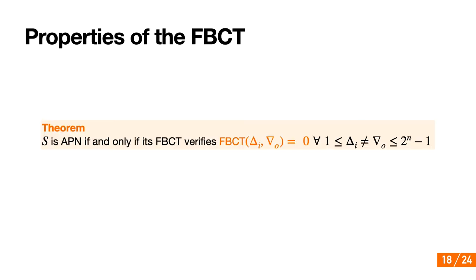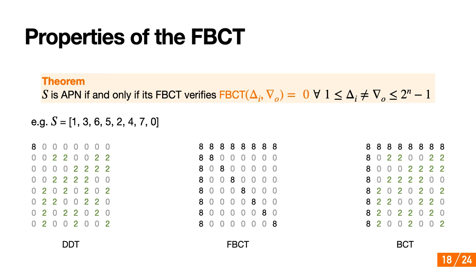We also have properties regarding APN functions. A function S is called almost perfect nonlinear (APN) if the derivative of S at delta_i has either zero or two solutions for any nonzero delta_i. When looking at the FBCT of such functions, S is APN if and only if the coefficient of its FBCT equals zero, except in the first row, first column, or first diagonal. Here's an example of a 3-bit S-box — you have the DDT, the FBCT, and the BCT.